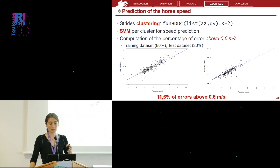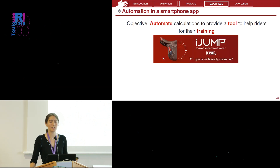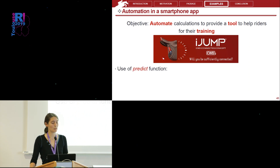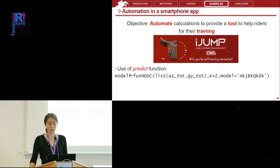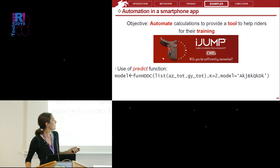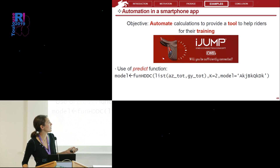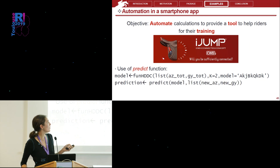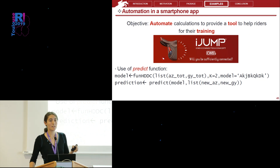With this procedure, we achieve only 12% error above 0.6 meters per second, so we are quite happy with this accuracy. Another objective was to automate these calculations to provide the prediction to the rider in real time. We train our clustering model on the reference database using acceleration in the z-direction and angular velocity in the y-direction. Then when the saddle collects new data, the data is sent to our cloud, and we only need to predict the cluster for the new data and apply the SVM according to the correct cluster.